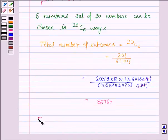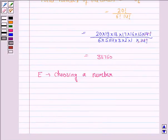Here, E is the event of choosing a number, and to win the prize there is only one such possibility. So the number of outcomes favorable to E equals 1.